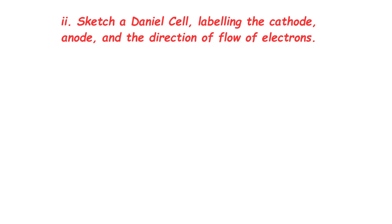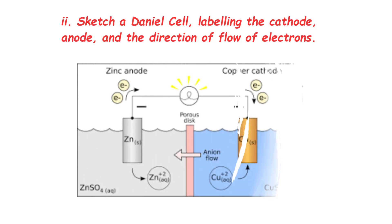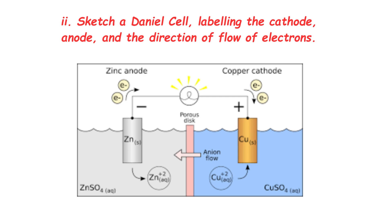Long Question 2: Sketch a Daniell cell, labeling the cathode, anode, and the direction of flow of electrons. Zinc rod = anode (oxidation). Copper rod = cathode (reduction). A salt bridge connects both. Electrons flow from anode to cathode (zinc to copper).